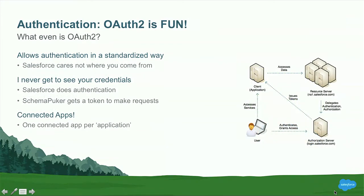First thing we need to do is authenticate to Salesforce — we're going to do what some people call the OAuth dance. We're going to request a token, provide a client ID and key to Salesforce, and Salesforce is going to ask the user to log in and provide us with a token. Doing it this way, SchemaPuker can never actually see your Salesforce credentials — Salesforce is the one validating that you have a legitimate account, and I simply get a token back that I can use to make requests on your behalf. To do this with Salesforce, we have what's called a connected app — you need one connected app per external application. In my developer org, I have a connected app for SchemaPuker, and that's where I get my client key and secret.